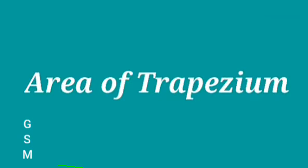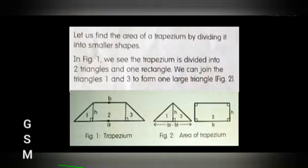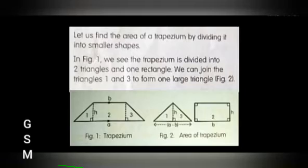Next, let us see the area of a trapezium. Let us find the area of a trapezium by dividing it into smaller shapes. In the figure, we see the trapezium is divided into two triangles and one rectangle. We can join the triangles one and three to form one large triangle as shown in figure two.